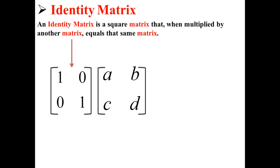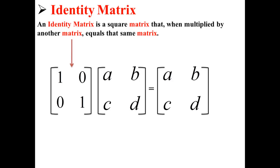Here we have a 2 by 2 identity matrix: 1, 0, 0, 1. When you multiply it by any matrix, your solution will be that same matrix.